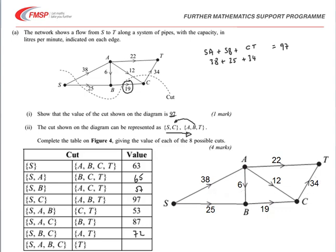Finally, we've got cut SABC, leaving T by itself. The two capacities we need to look at are the 22 and the 34, giving us 56.